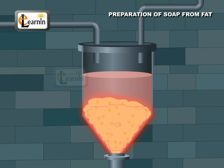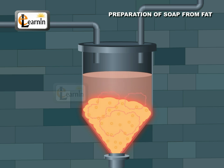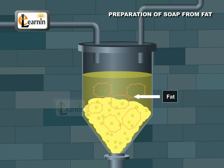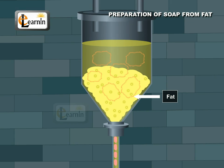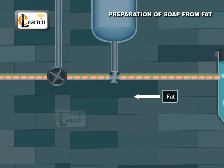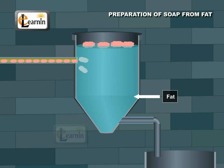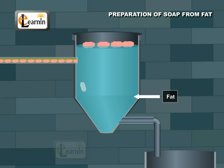At a high temperature, the fat undergoes saponification and produces soap and glycerol. The soap floats on the surface of the aqueous solution, whereas glycerol passes into the solution, dissolving in water.